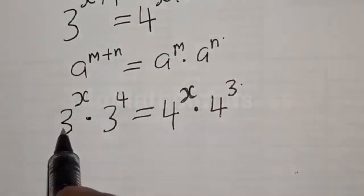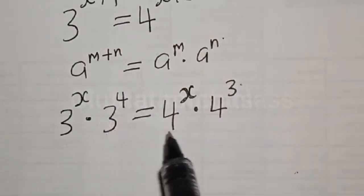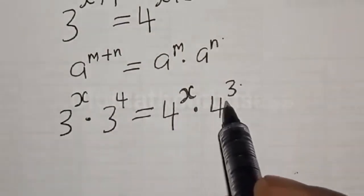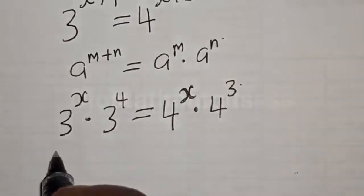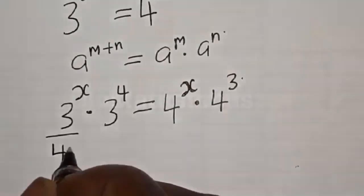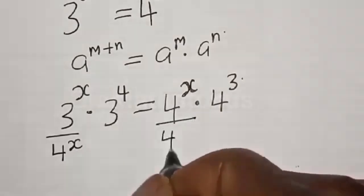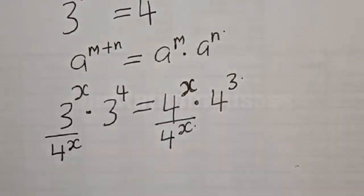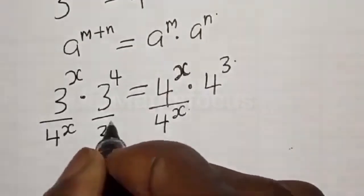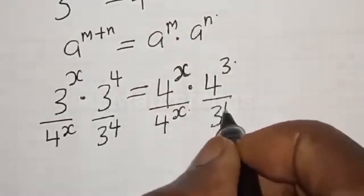We have 3 raised to the power x multiplied by 3 raised to the power 4 on the left hand side, and on the right hand side 4 raised to the power x multiplied by 4 raised to the power 3. Let's divide both sides by 4 raised to the power x and also by 3 raised to the power 4.